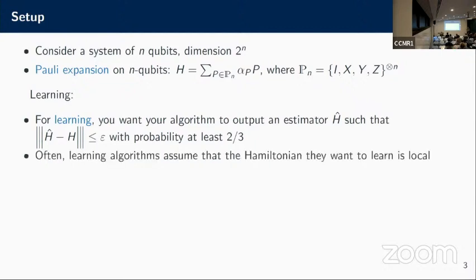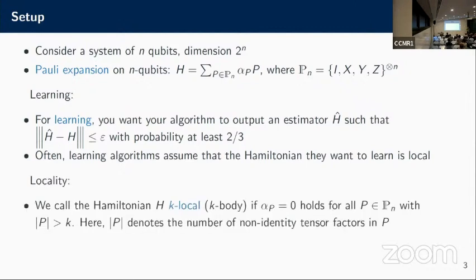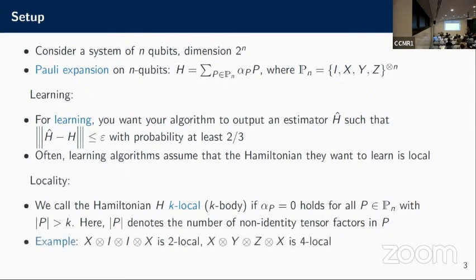Often a learning algorithm would assume to begin with that the Hamiltonian they want to learn is local. Then you can show there's an efficient algorithm. That's a standard assumption. But we basically thought to ourselves, how do people know? How do you know that you're local and can actually do this? So this is where we come in. What do we want to do? First, we have to talk about locality. Depending on the community, this is also called k-bodiness. k-local for us means that all the coefficients alpha_p are zero for the p's that have weight at least k. That means there's at least k factors or entries that are not the identity. For example, x_i tensor x is two local because there's two things that are not the identity. And x tensor y tensor z tensor x would be four local because there's four things that are not the identity.